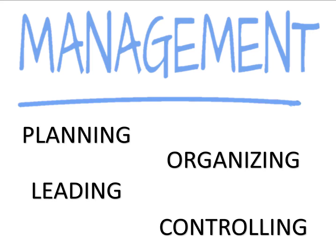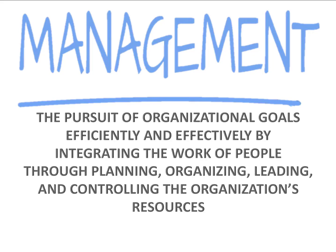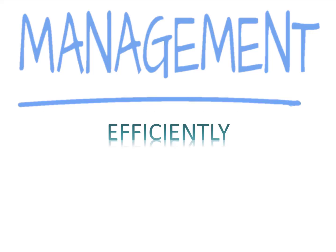These four terms make up the management process, which we'll talk about shortly. Two other key words from the definition are efficiently and effectively. To be efficient means to use your resources — people, raw materials, and money — wisely and cost-effectively. To be effective means to achieve results, make the right decisions, and successfully carry them out to achieve the organization's goals.